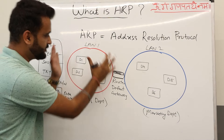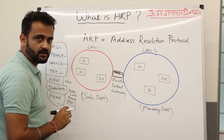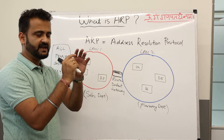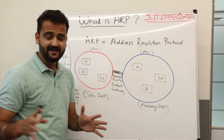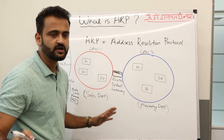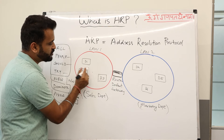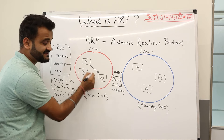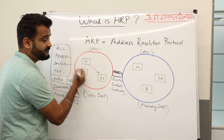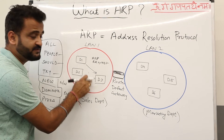Consider this local area network for a sales department. Device 1 wants to communicate with Device 3. Every device maintains an ARP cache — a mapping of IP address to MAC address — but to simplify, we'll assume there is no cache anywhere, not at any device nor at the router. It's a completely first-time communication. Device 1 has the IP address of Device 3 but does not know its MAC address, so the first thing it does is send an ARP request.